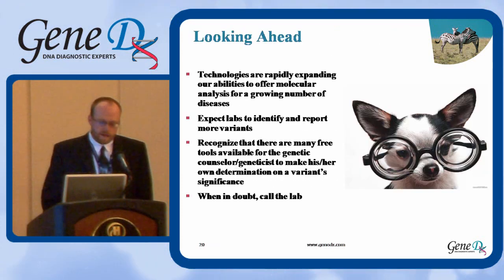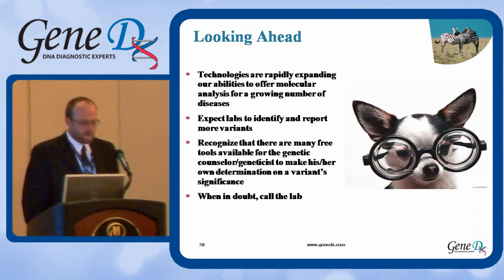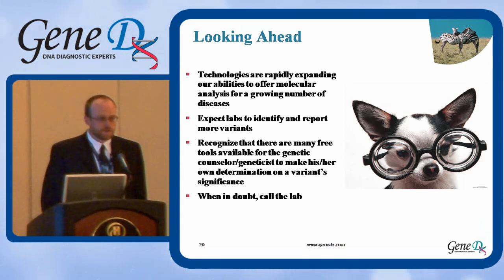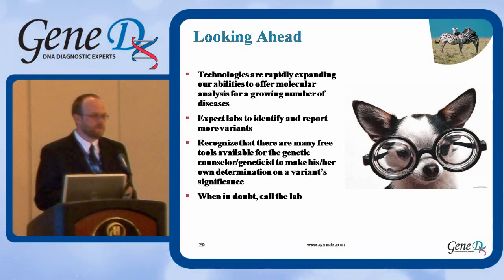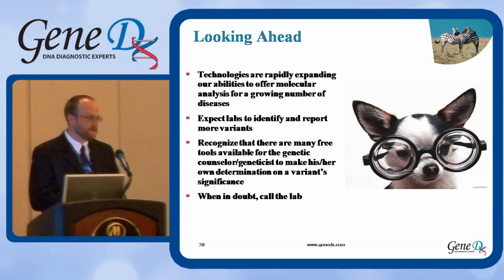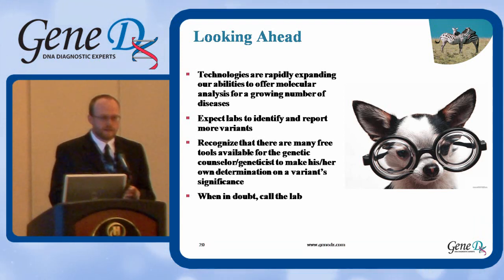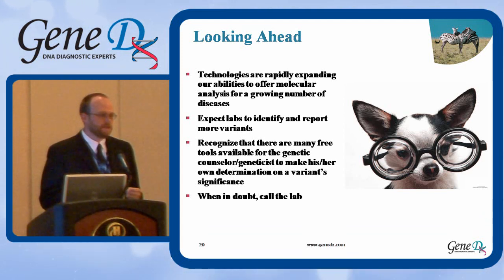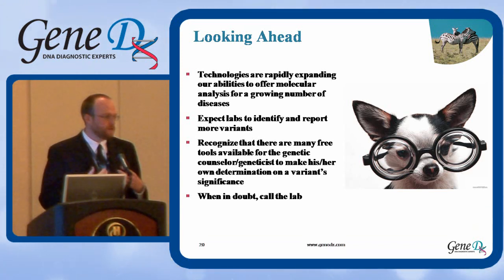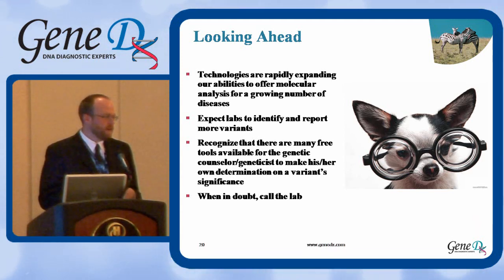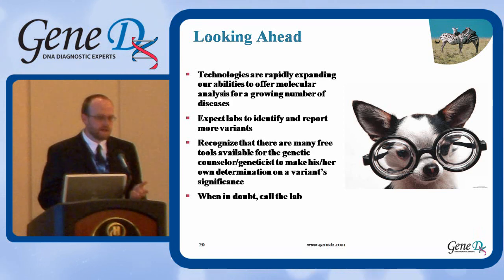Looking ahead, technologies are rapidly expanding our abilities to test complex disorders as well as to look at genes in much greater depth than we have before. Expect all laboratories that you use to pick up on more variants of unknown significance. But also recognize that just because you get a report with only variants of unknown significance, there are tools you can utilize to help you come to your own conclusions. When in doubt, always call the laboratory — talk to a counselor or a geneticist at the laboratory.